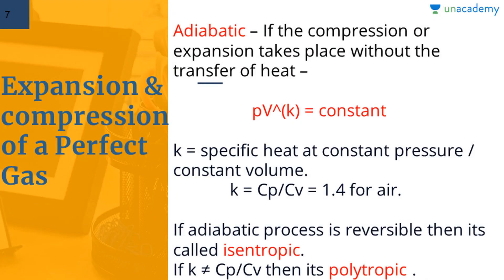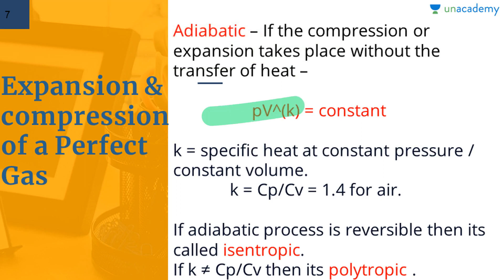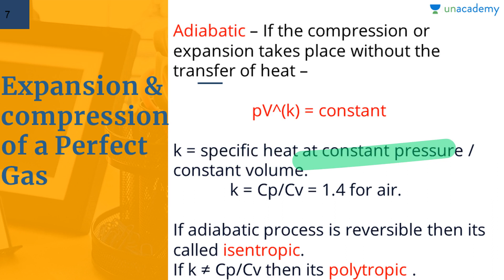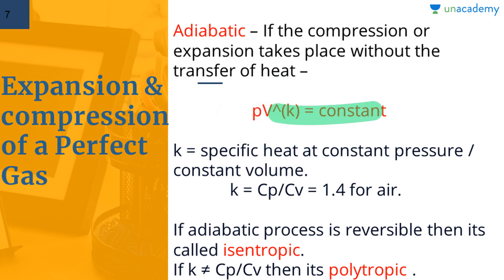The second type is the adiabatic process. In this, compression or expansion of the gas takes place without any transfer of heat to or from the surroundings — there is no heat interaction. It is given by PV^K = constant, where K = Cp/Cv (specific heat at constant pressure divided by specific heat at constant volume). For air, K = 1.4. So if air is given, take K = 1.4.